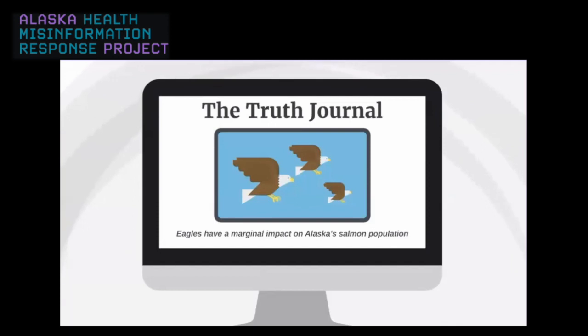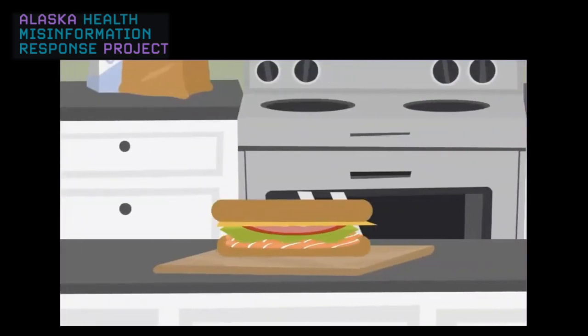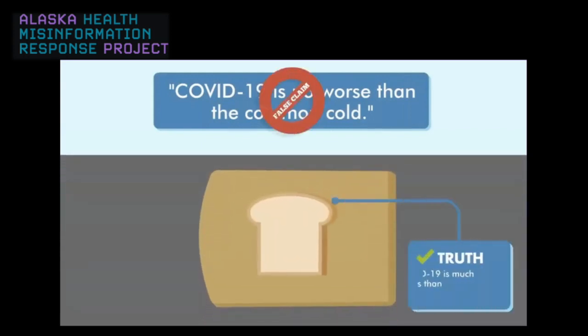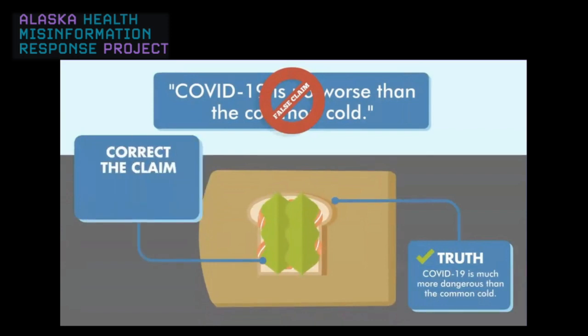Finally, check the facts using trustworthy sources. If you encounter misleading information, try using a truth sandwich. Suppose you're responding to the statement that COVID-19 is no worse than the common cold. Start with the truth: COVID-19 is much more dangerous than a cold. Then explain how the claim is misleading, emphasizing the truth behind it: mild COVID-19 and the common cold have many similarities, but COVID-19 can lead to hospitalization and death — colds do not. Lastly, return to the truth: always repeat more of the truth rather than what isn't factual.